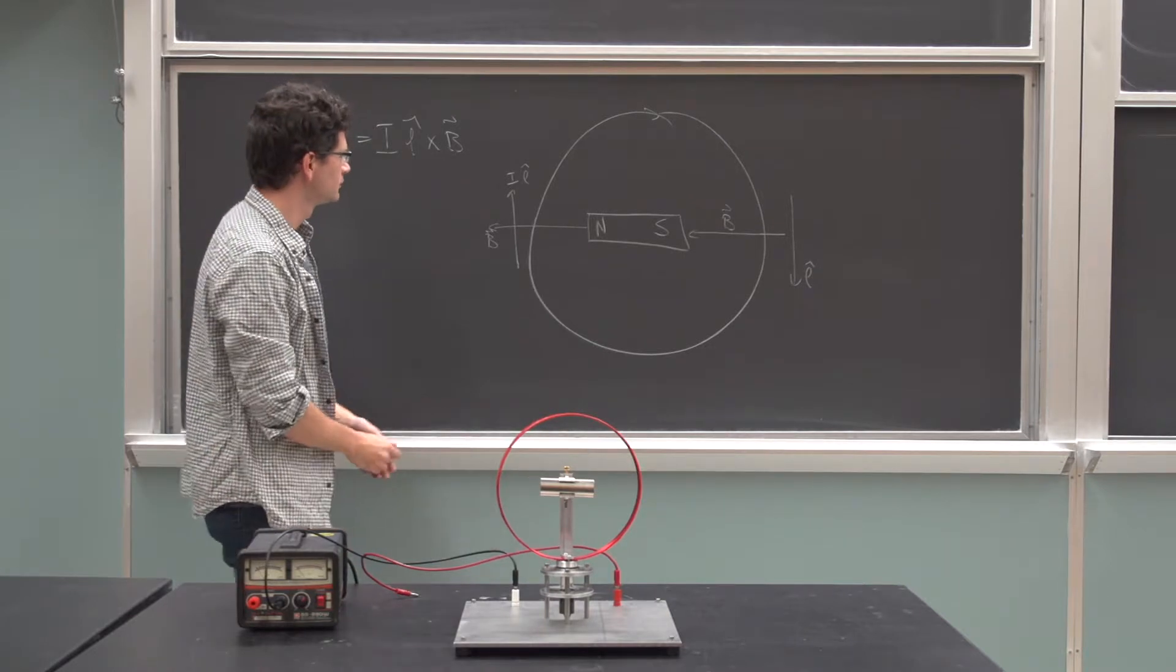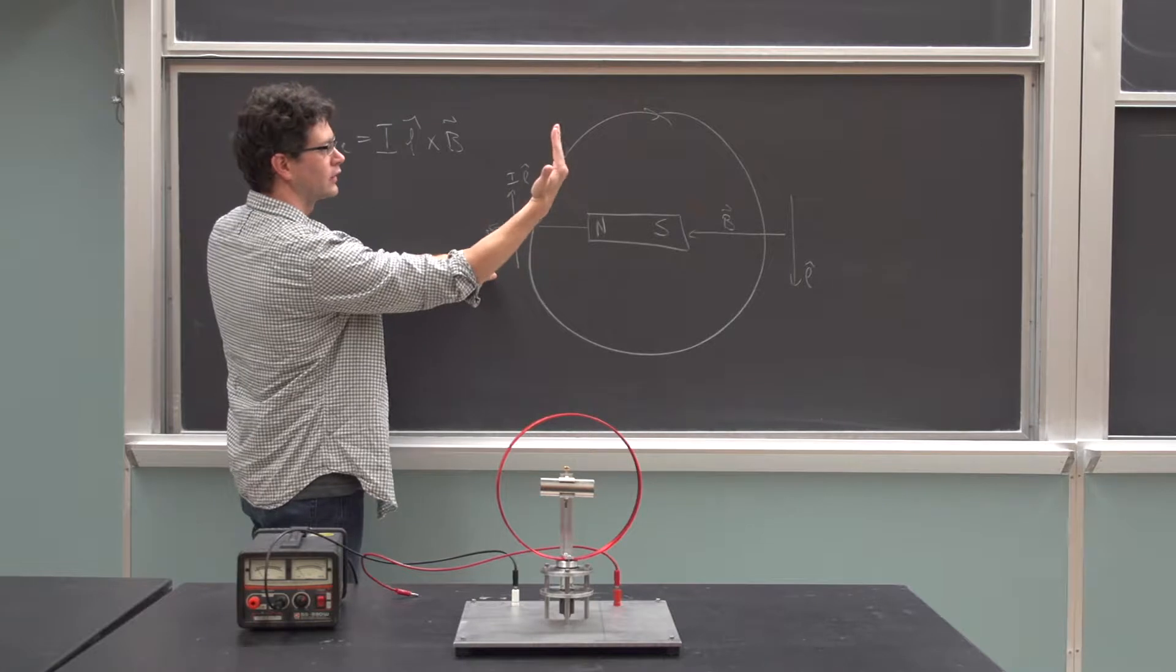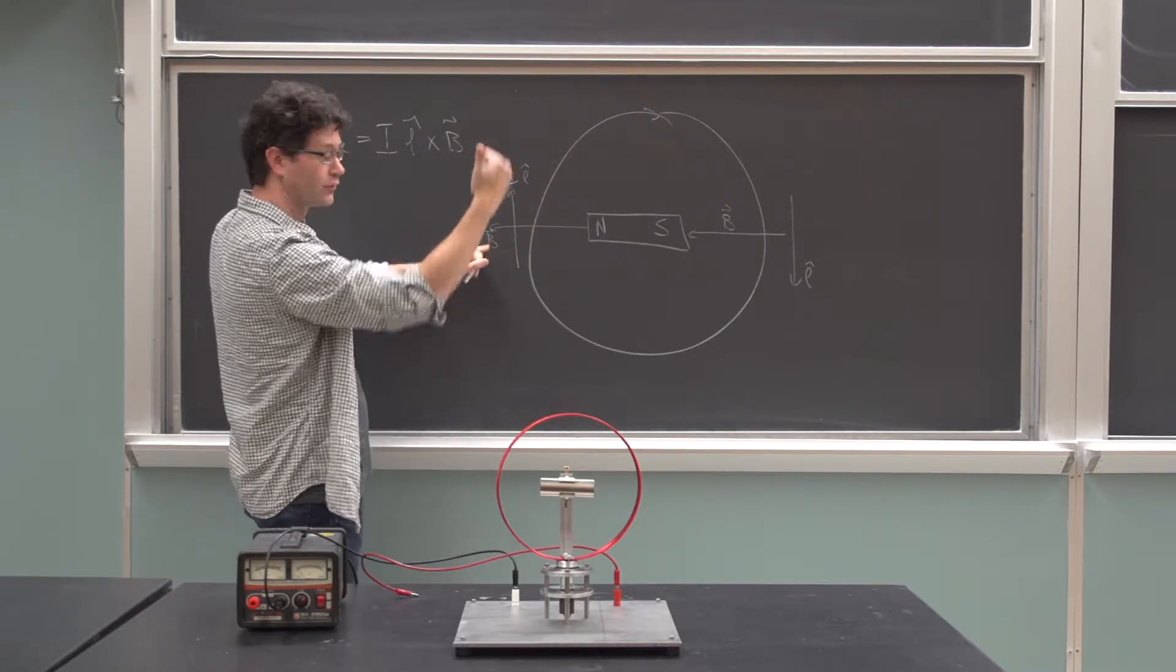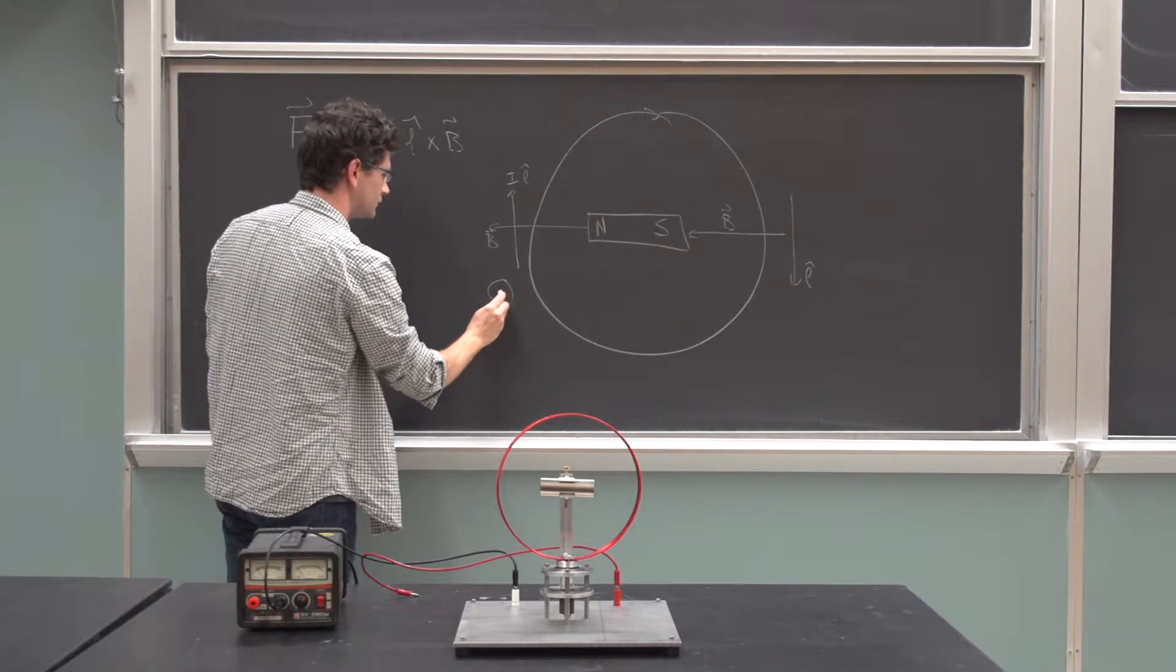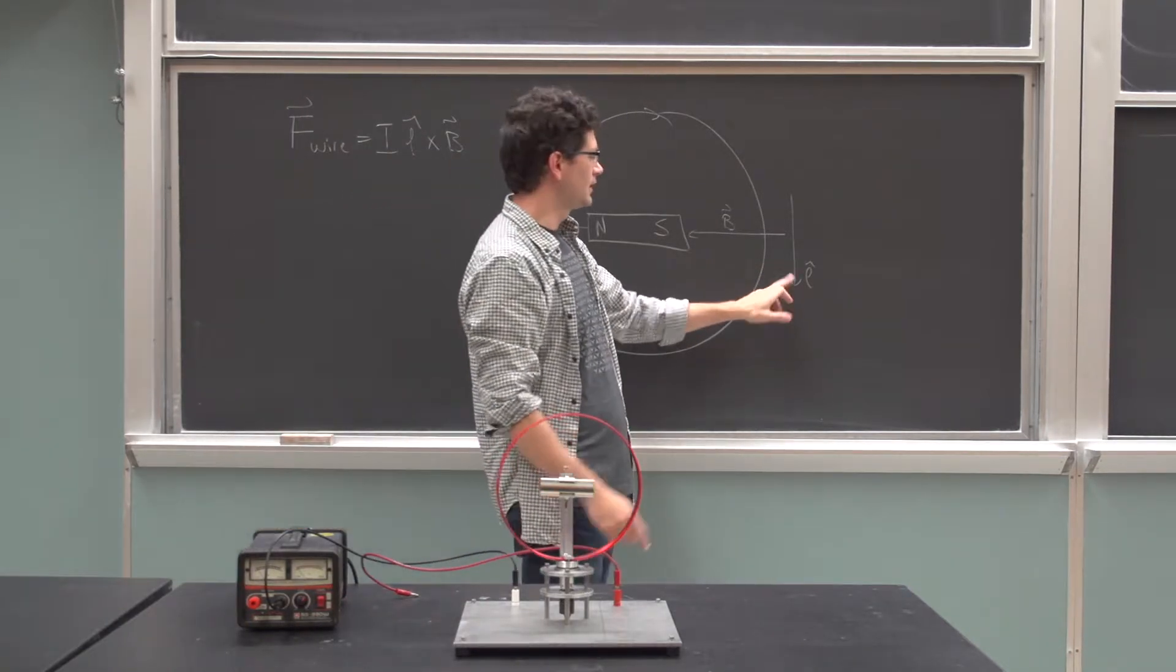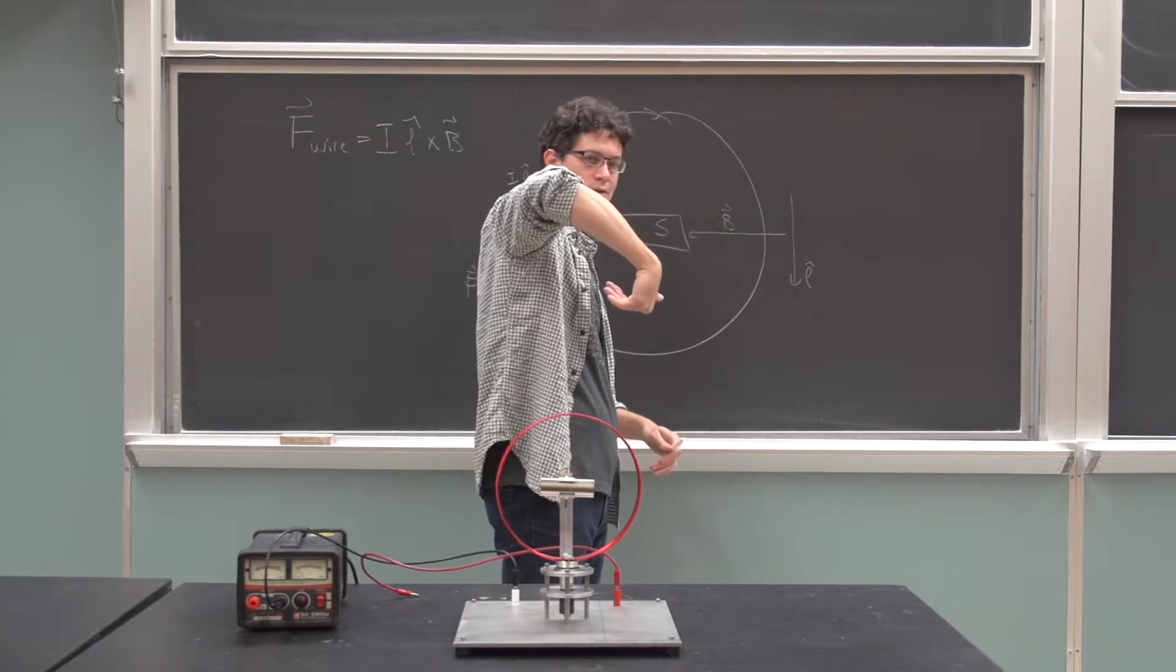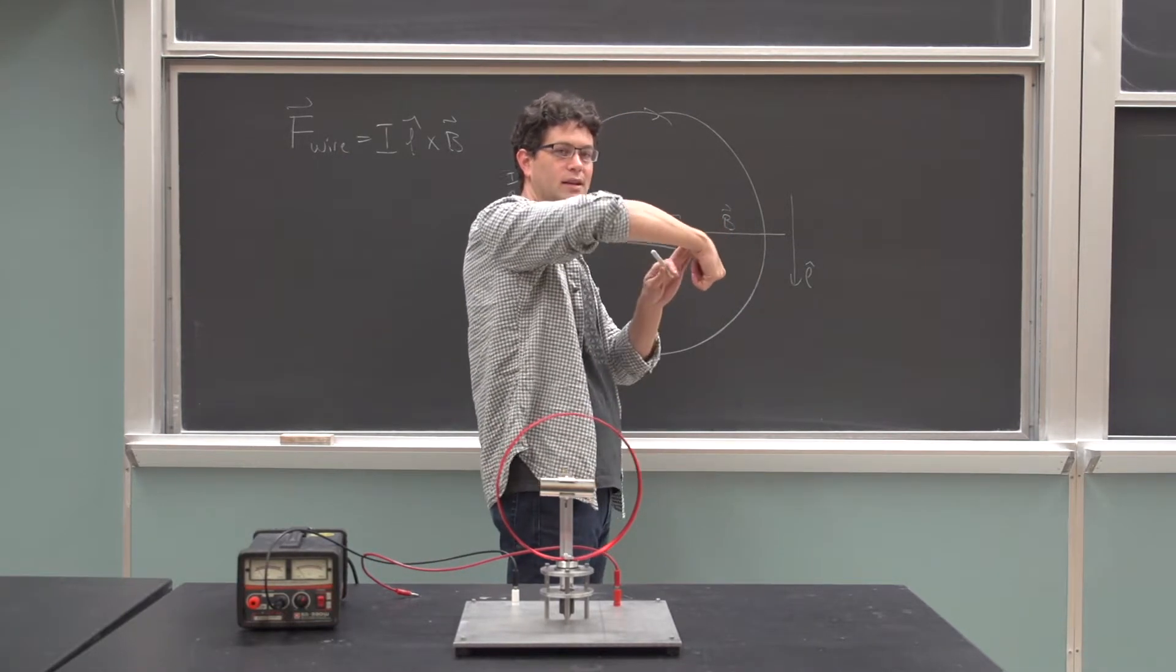So let's do the right-hand rule, L cross B. L cross B... B is to the left, gives me, my thumb is pointing inward,